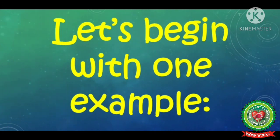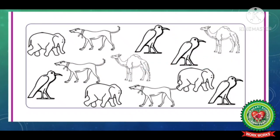Now let us begin with one example by which we will be able to learn how to arrange the data. Look at this picture. You will see that there are various animals and birds in this picture. This is data — that means this is the information which is given to us. But this is a mixture of many things: elephants, dogs, camels, and many birds.